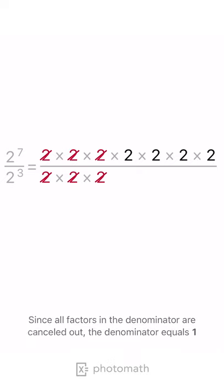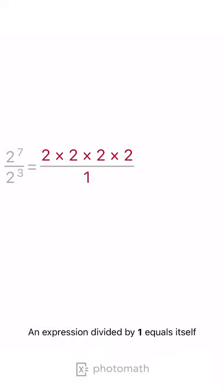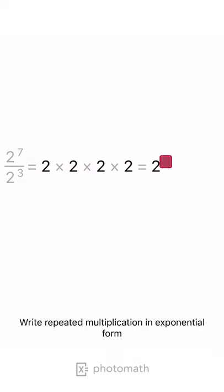Since all factors in the denominator are cancelled out, the denominator equals 1. An expression divided by 1 equals itself. Write the repeated multiplication in exponential form.